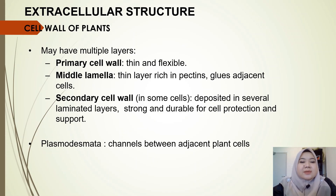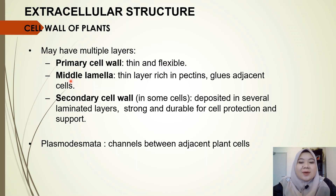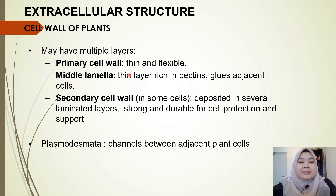The cell wall of plants may have multiple layers. The primary cell wall is produced by growing plant cells and is thin and flexible, allowing plant cells to grow. In between two plant cells, there is a layer called the middle lamella, which is a thin layer rich in pectin.